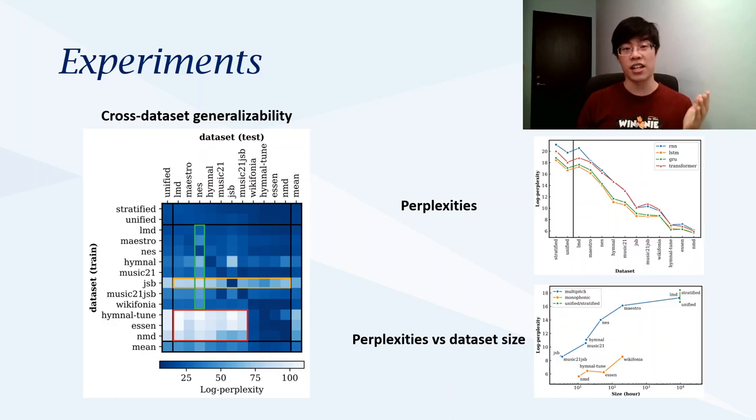We also did some machine learning experiments on these datasets. For example, the figure on the left shows the pairwise cross-dataset generalizability. In fact, these experiment results and the dataset analysis could help researchers choose a proper dataset in future research. If you want to know more about the experiments, please come to our poster.